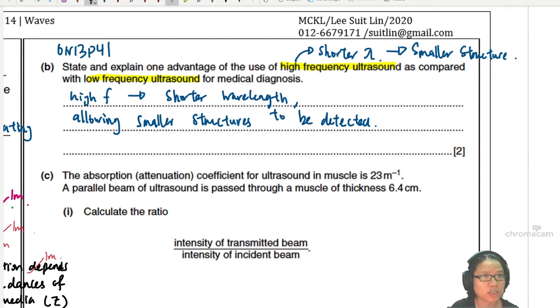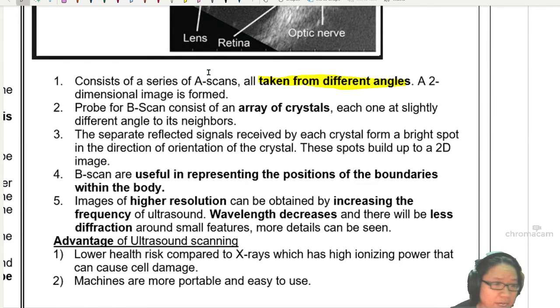So when we say smaller structures can be detected, right? Just a quick review for this. This is for diffraction. The B-scan description is here. So we can get higher resolution. Not sharpness, a higher resolution is like 180p compared to 720p. It's not sharper, it's just more details can be seen. So we can increase the frequency because wavelength is shorter and then there will be less diffraction around small features. So more details can be seen.